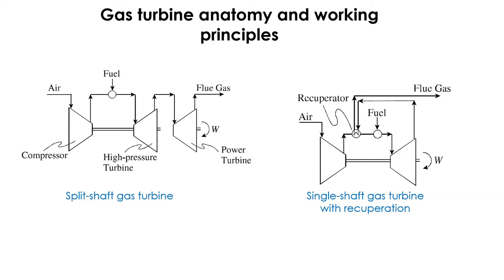This type of turbine is slightly more complex. The first turbine provides the power necessary to drive the compressor, and the second turbine provides the power for the external load.